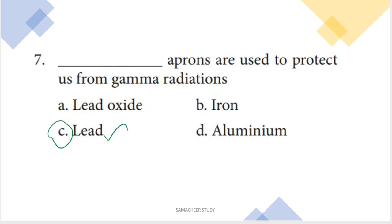Next: what aprons are used to protect us from gamma radiations? Gamma radiations are very dangerous. The aprons used to protect against gamma radiation are lead aprons. Lead is the material used, and wearing lead aprons protects us.